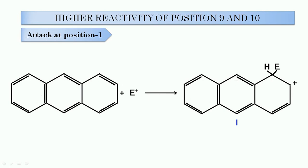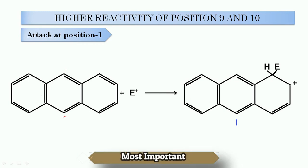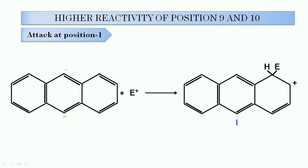Next is the higher reactivity of positions 9 and 10. In the case of both electrophilic substitution and addition reactions of Anthracene, attack will preferably occur at positions 9 and 10. This great reactivity of positions 9 and 10 can be easily explained on the basis of the formation of more resonance-stabilized contributing structures when attack occurs at positions 9 and 10. Let us compare the attack at position 1, attack at position 2, and attack at position 9.